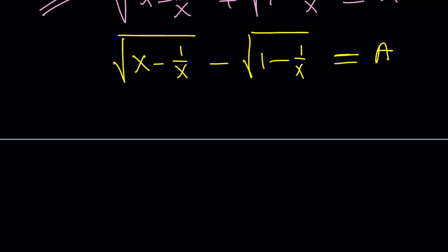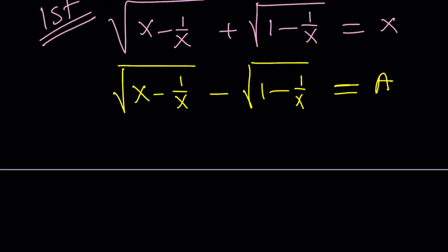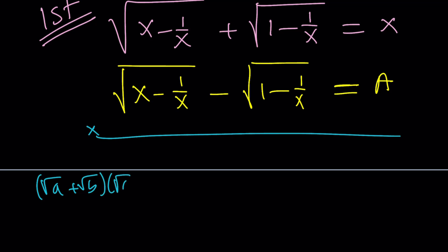Since these are two conjugates, we can go ahead and multiply them. And by multiplying, we're getting rid of the radicals because it's kind of like this. You're multiplying square root of a plus square root of b by square root of a minus square root of b, which is from difference of two squares, a minus b, because you're squaring the square roots. They cancel out, leaving us with a minus b. That's how the formula works.